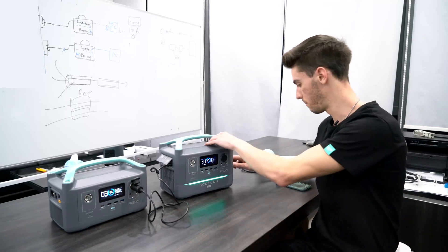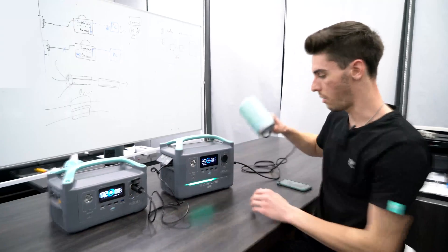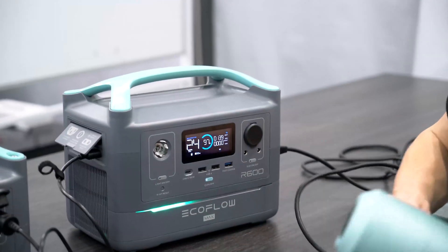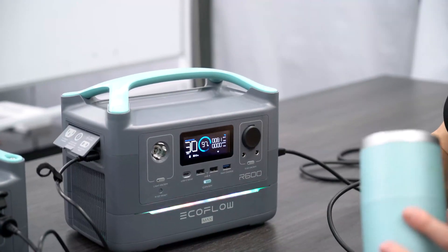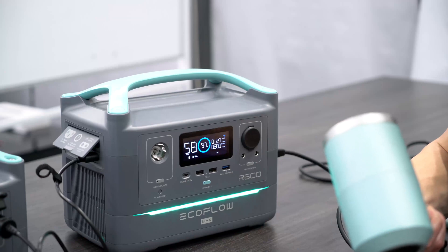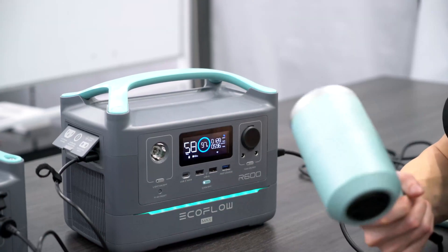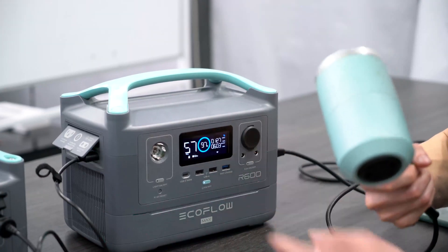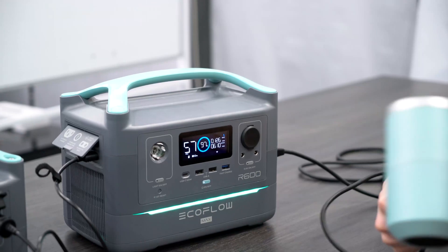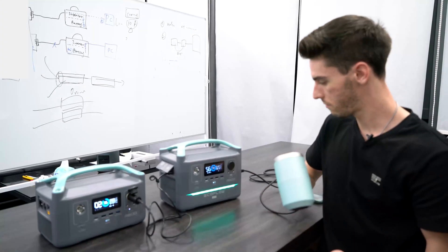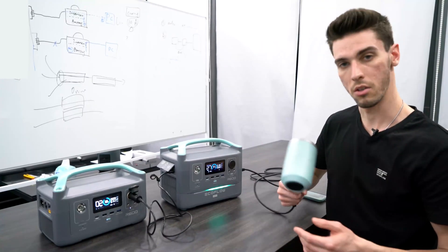Now we're going to test it under a load. This is the 1200 watt hair dryer from before. Let's see if it works. Yep, working good. We're sitting around 600 watts. So that's working great.